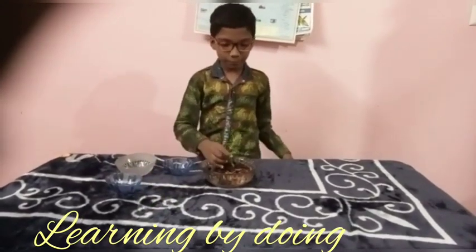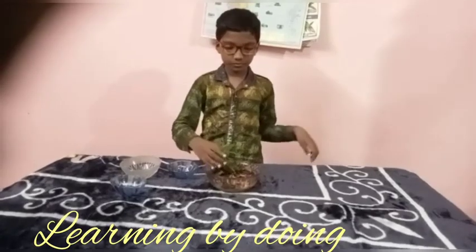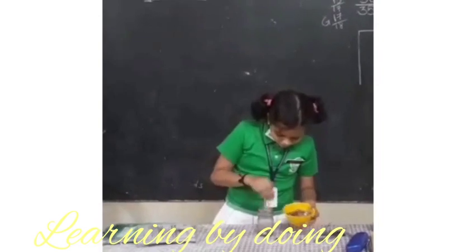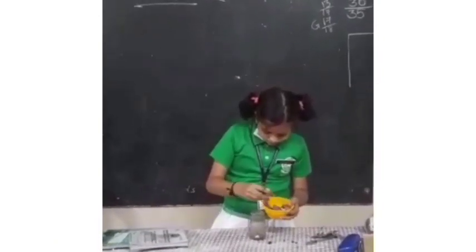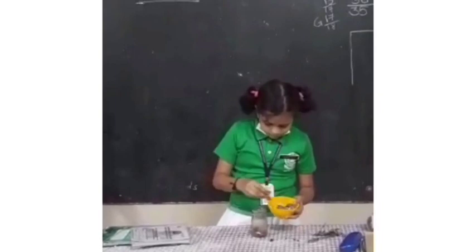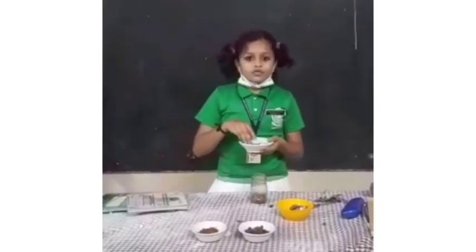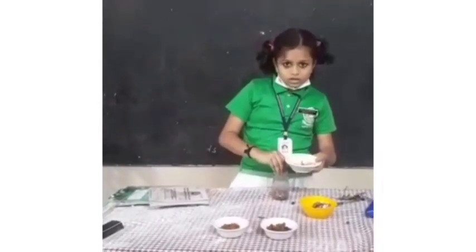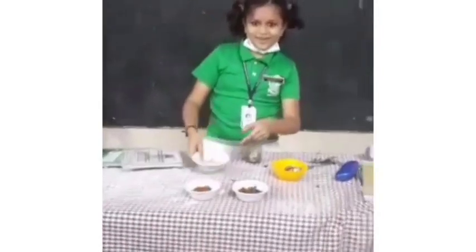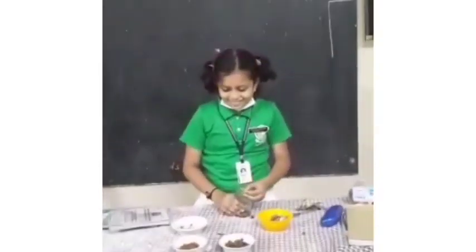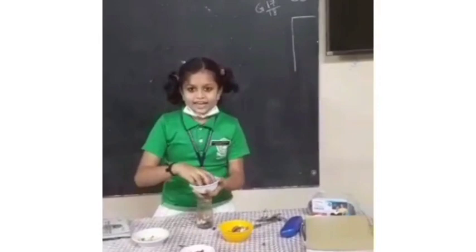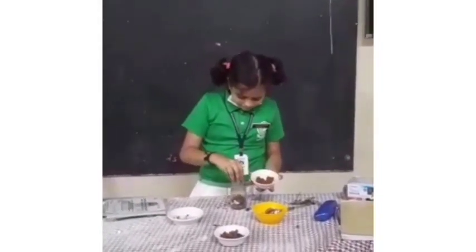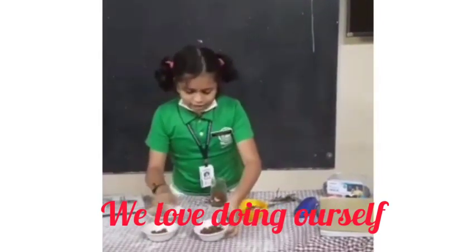Here are all the layers represented with edible items: Cashews, Cake, and Oreo Biscuits. First, we will start with Chocos for the bedrock, Cashews for the subsoil, Cake for the topsoil, and Oreo biscuits for the humus. Then we take a plant and plant it inside this jar.